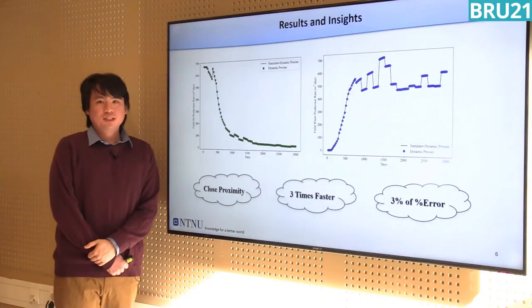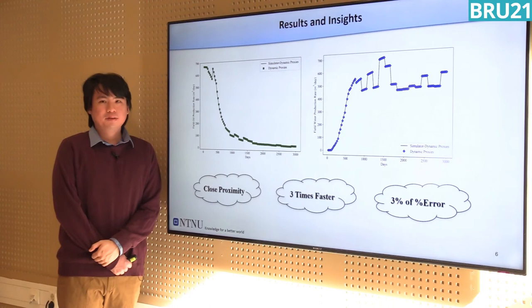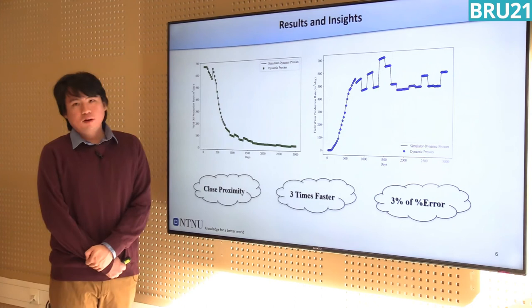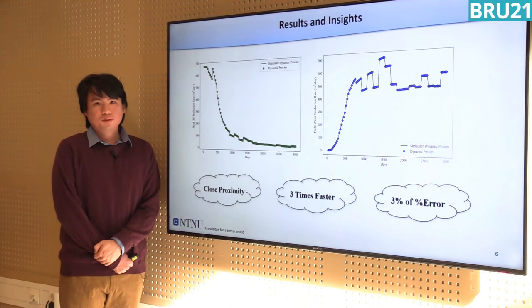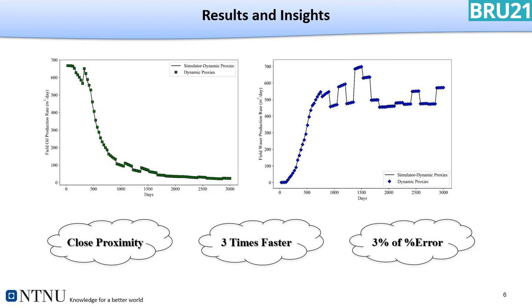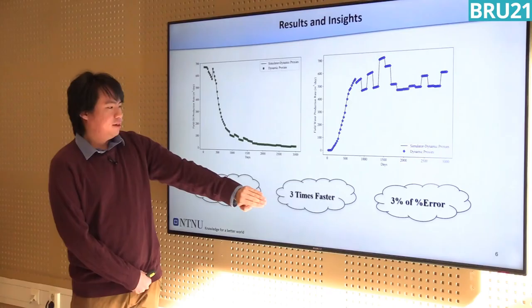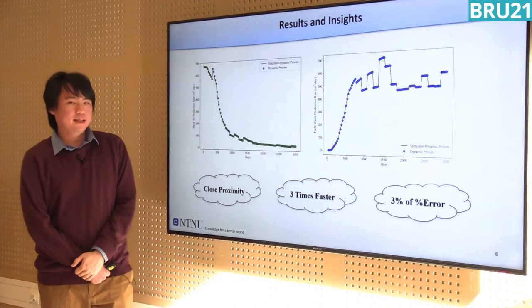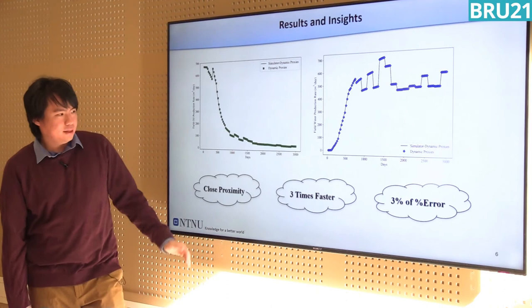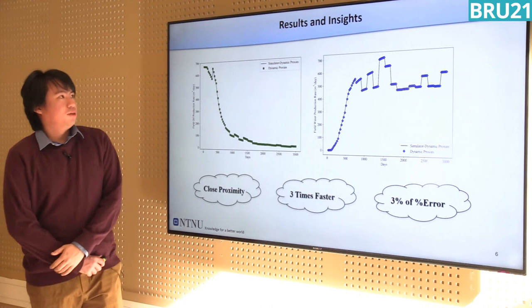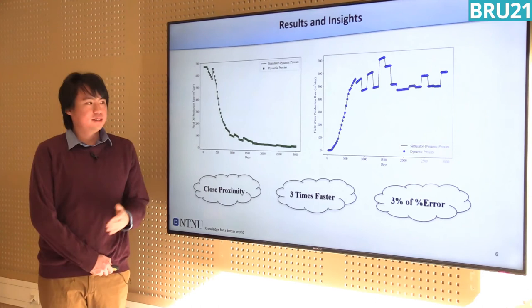Now I would like to present the results and insights obtained from this research work. After obtaining the optimal solution from the proxy models, we feed these solutions back to the reservoir simulators to obtain corresponding results. As you can see, the results from the proxy models match nicely with the results from the simulators, with very close proximities. Additionally, the proxy models run three times faster than the reservoir simulators when it comes to optimization. Comparing the optimized NPV, they are only within 3% percentage error, showing that our proxy models work really well in these problem settings.